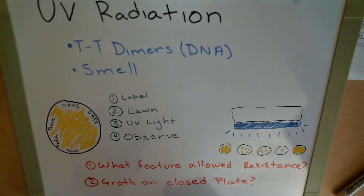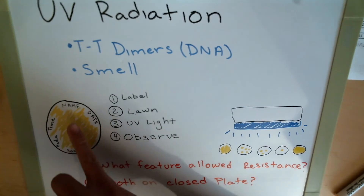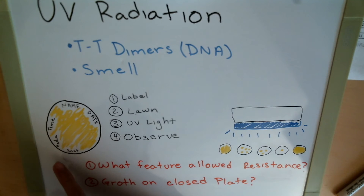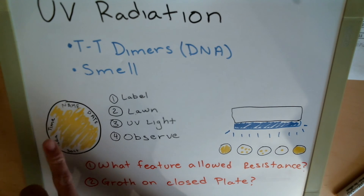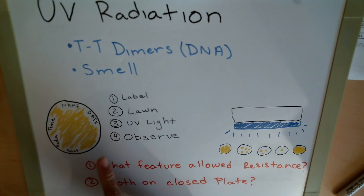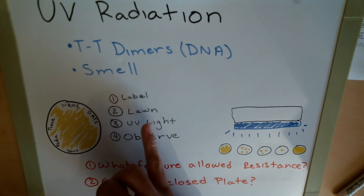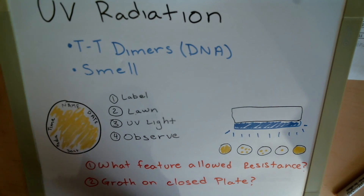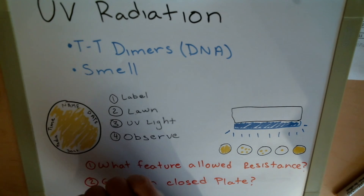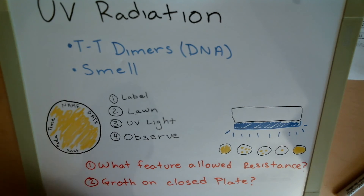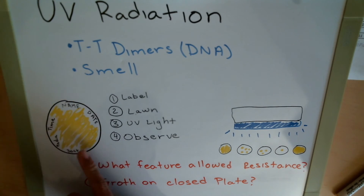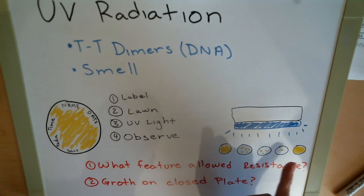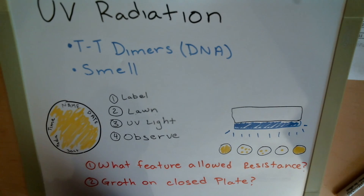First, label your plates with your name, the date, the bacteria, possibly the media, and the time of incubation. Next, create a lawn — either using a spread plate technique or a cotton swab to swab the bacteria onto the plate. Then expose each plate to the UV light for its respective amount of time, and observe the results the next day in lab.